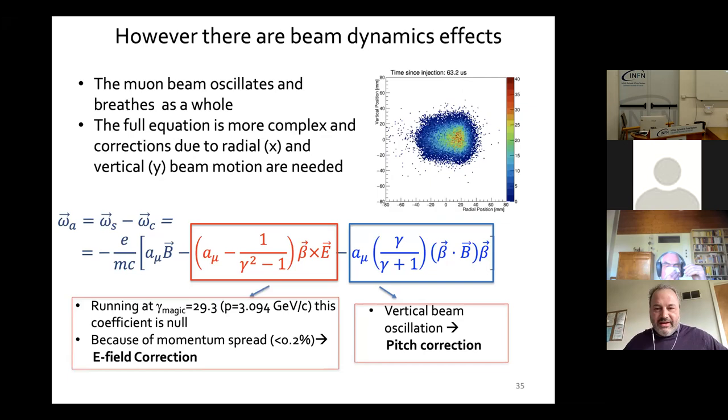The second correction is the pitch correction: due to vertical oscillation, muons have a vertical component of velocity along the direction of the magnetic field, which modifies the precession equation and must be corrected for.